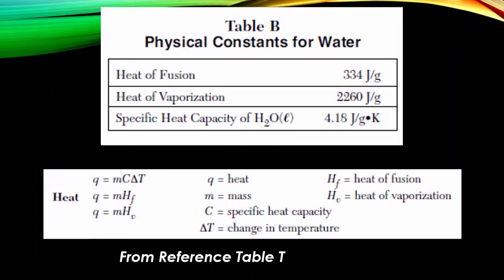The different references and formulas that we need to know come from Table T and from Table B in the reference table. Table T is going to hold all the different mathematical formulas that we're going to be using, and Table B holds all the specific values for water.